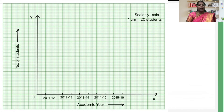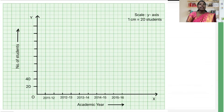Now we will mark multiples of 20 along the vertical axis OY: 20, 40, 60, 80, 100, 120, 140, 160, 180, and so on.